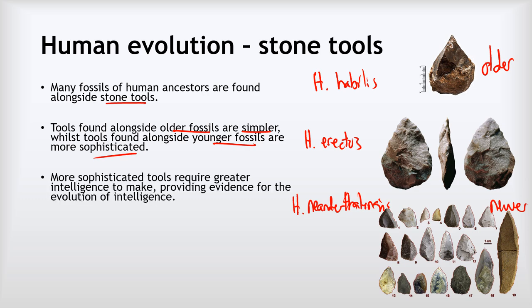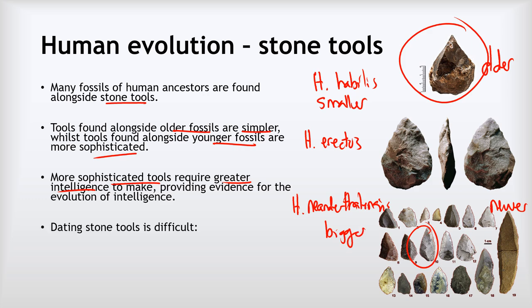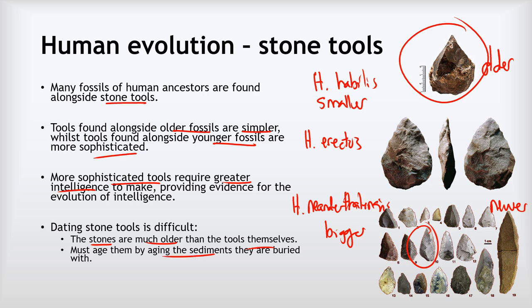What this suggests is that more sophisticated tools require greater intelligence to make them. You don't need to be clever to make that, but you need to be quite clever to make one of these. That provides evidence for the evolution of intelligence, and that matches with what we know about brain volume. We know Homo habilis had a smaller brain, and Neanderthals had a bigger brain. This is evidence of that bigger brain leading to greater intelligence. It's worth noting it can be hard to accurately date stone tools because the stones are much older than the tools themselves. We have to age them by aging the sediments—the soil and dirt and other stuff—that they're buried alongside.